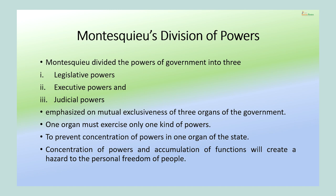Montesquieu first divided all the powers and functions into two — the general legislative powers and the general executive powers — and then divided the executive powers into two: the executive powers and the federative powers. He further divided the executive powers into the civil law executive powers and the judicial powers. But generally, we know that Montesquieu divided all the powers and functions into three: the legislative powers, the executive powers, and the judicial powers.